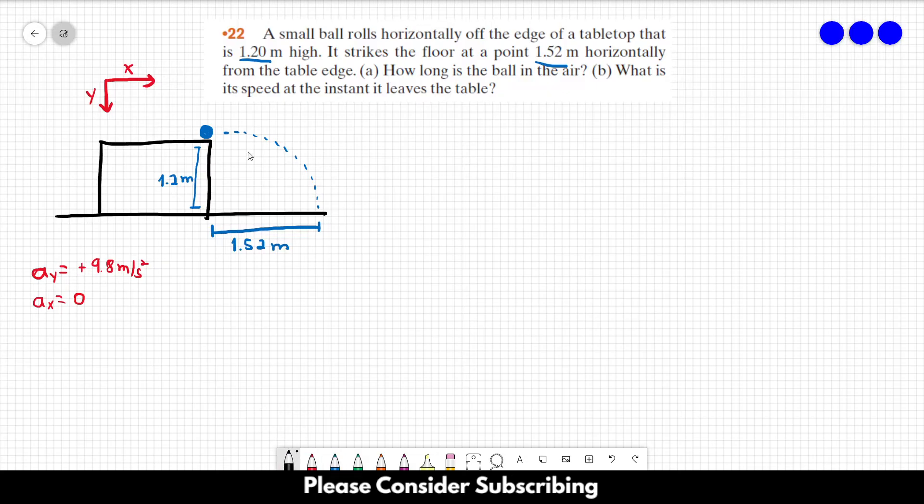And we can use this equation over here to solve letter A. Let's say that at the edge of the tabletop over here in this green dot, the initial height is equal to zero, and the initial position in the x direction is equal to zero as well.